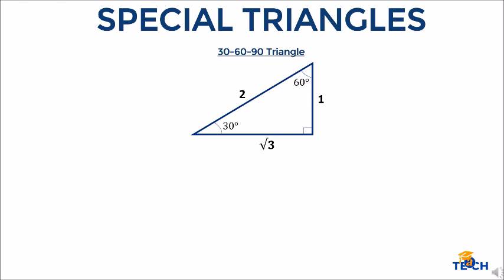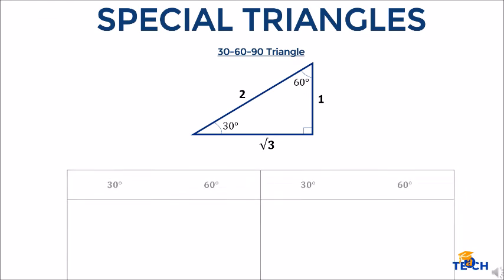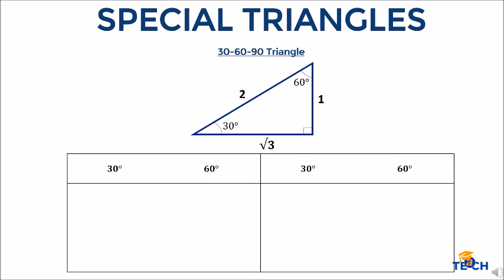Let us determine the trigonometric functions for both 30 degrees and 60 degrees. For 30 degrees: sine theta is opposite over hypotenuse, which is 1/2. Cosine theta is square root of 3 over 2. And tangent theta is 1 over square root of 3.